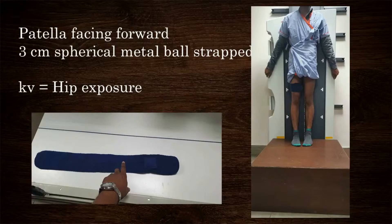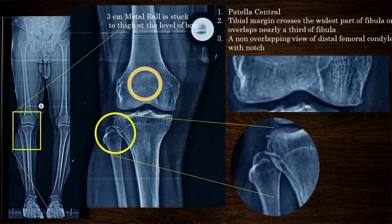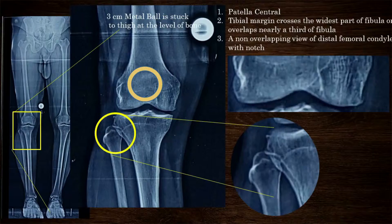The patient's patella should be facing forward and the anterior superior iliac spine should be at the same level. Any limb length discrepancy should be addressed by keeping planks under the shorter leg. A properly exposed scanogram should be examined for central position of the patella, the lateral tibial margin crossing the fibula at its widest part, a one-third overlap of fibula by tibia, and a clearly visible distal femur and joint line without any overlap.